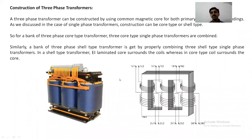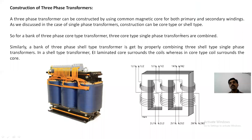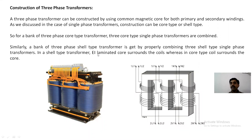Construction of three-phase transformers can be of core type or shell type, just like single-phase transformers. A common magnetic core is used for both primary and secondary windings across all three phases. To form a three-phase core type transformer, we take three single-phase core type transformers; similarly for shell type. In shell type, the EI laminated core surrounds the coil, whereas in core type, the coil surrounds the core.